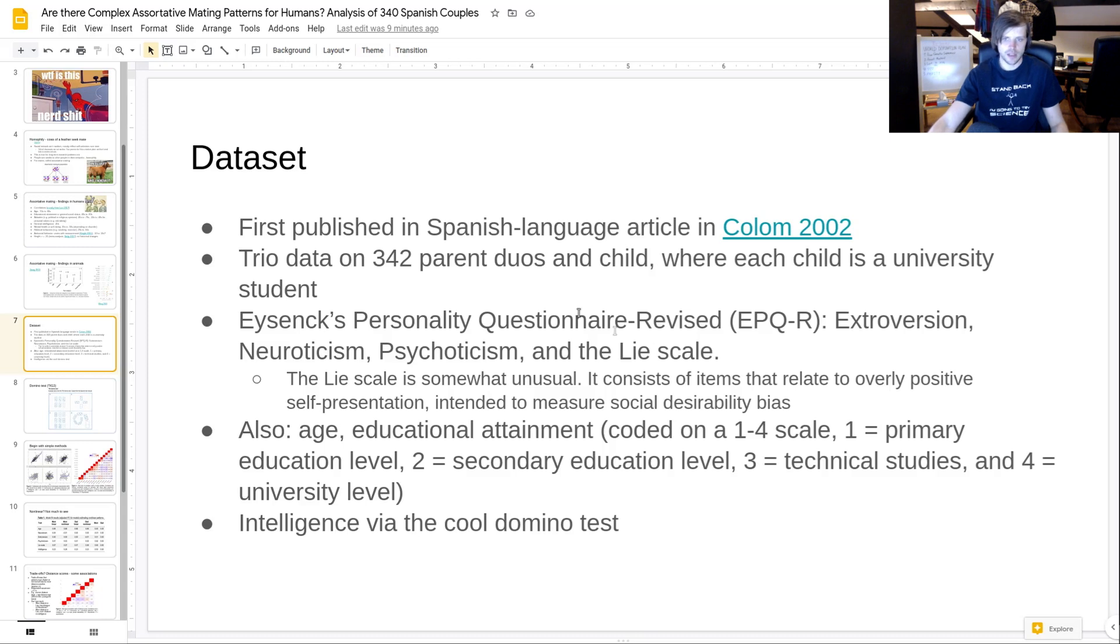That's a mixture of low agreeableness and low conscientiousness. So you could say that if you split this out, you would get the big four and you're just missing the openness scale. On the other hand, it does have the lie scale and lie scale is kind of unusual, but it's essentially social desirability. There's a bunch of questions in this questionnaire about self-presentation, like 'I would never steal.' People who agree with some of these things are kind of delusional about themselves or just lying for self-presentation purposes.